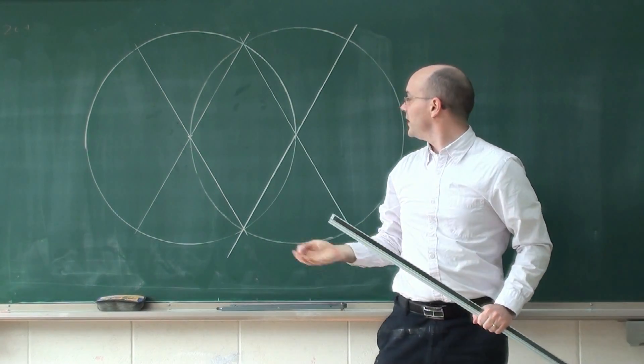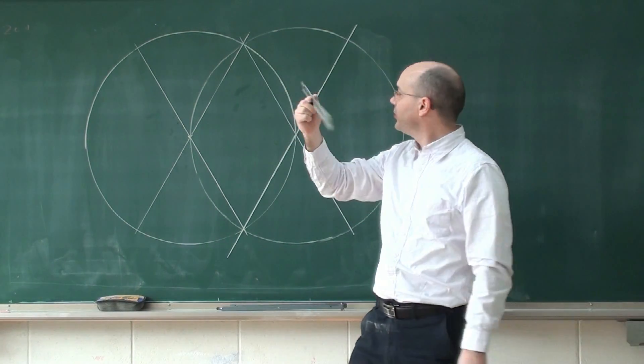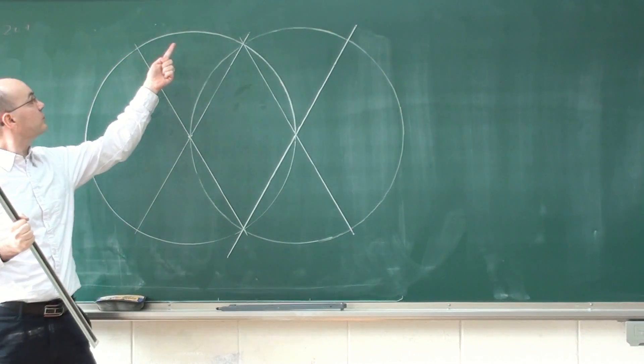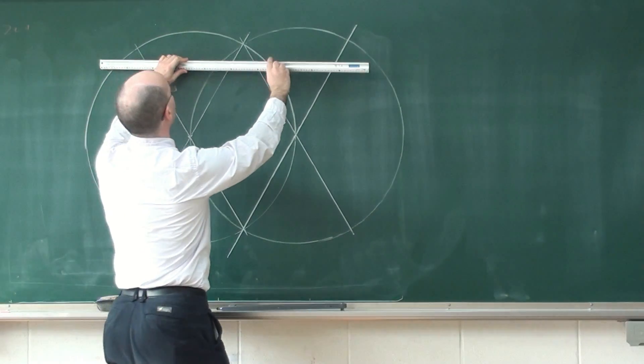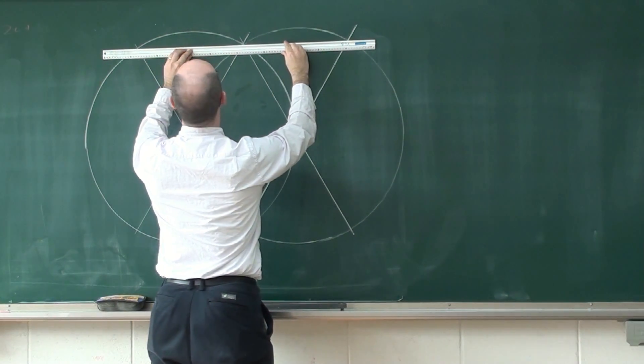Once you are done with this, you will make a straight horizontal line on the top. If you drew that perfectly well, those three points should be aligned. Let's check that out. Yeah, not so bad.